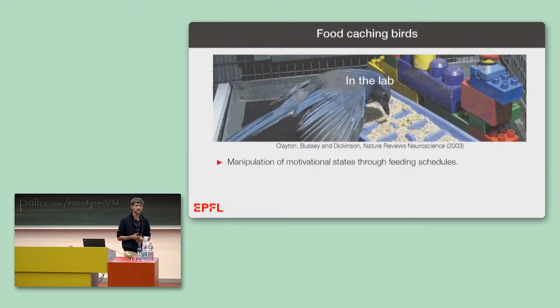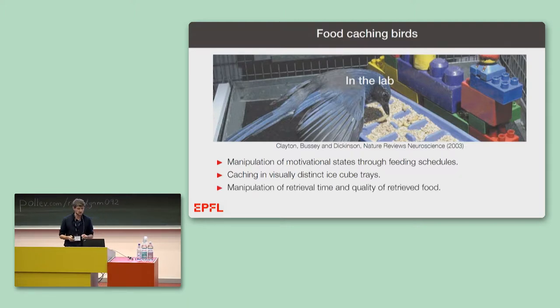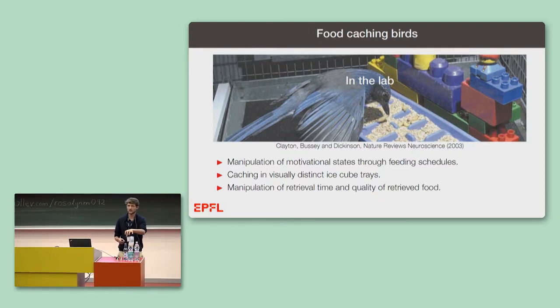These birds have been studied extensively in the lab over the last 20, 30 years, and the experimenters can manipulate the motivational states of these birds through different feeding schedules. They can provide them visually distinct ice cube trays, as you can see them here, for caching food items, and they can manipulate the retrieval time and the quality of the retrieved food. For example, they can pilfer, that is, steal all the food items in one of the caching trays, but not another one, or they can degrade, that is, turn unpalatable, one of the food types, but not another food type.